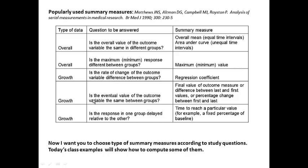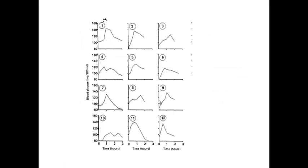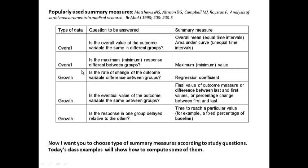If your question is whether the eventual value of the outcome variable is the same between groups — and you don't really care what happens to glucose levels in between — then you can use the value at the end of the study. Or, if your question is whether the response in one group is delayed relative to the other, then you might use time to reach a particular value as a summary measure, such as the half-life of a drug.